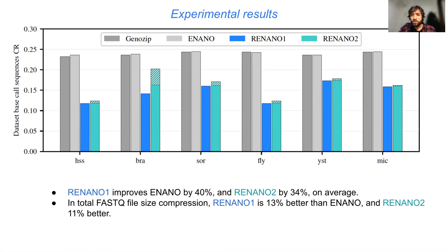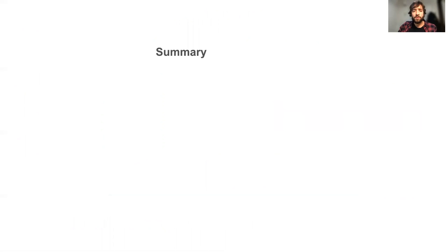Both modes of ReNano also consistently outperform GenoSeq. It is interesting to see that compared to ReNano1, ReNano2 achieves similar compression results in datasets with high coverage profile, which is not the case for dataset BRAC that has 1x coverage.